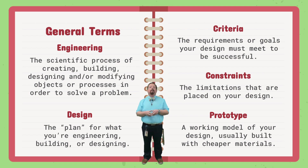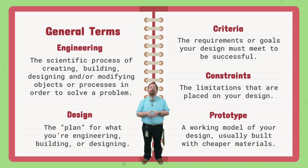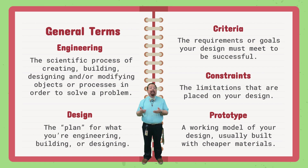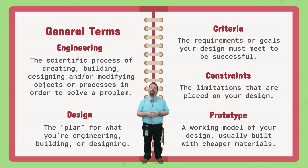Your design will usually be given a set of criteria and constraints. Criteria are the requirements or goals that your design must meet in order to be considered successful. If your design doesn't do what you're trying to make it do, it's not a successful design. Constraints are the limitations that are placed on your design — your design has to fit within some specific set of rules in order to even be considered a viable design.